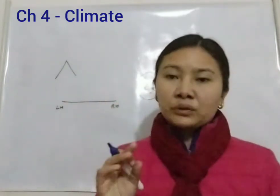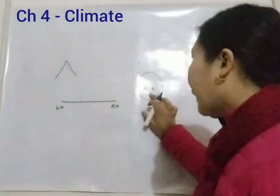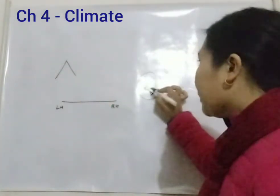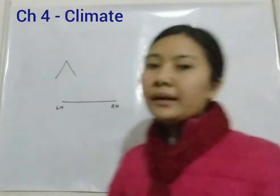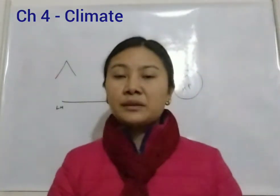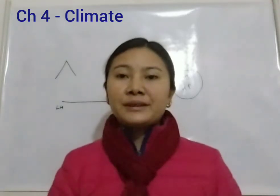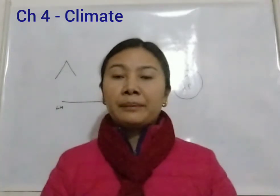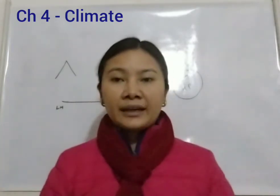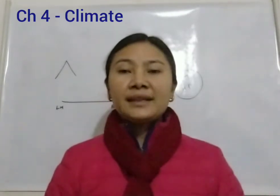High temperature means low pressure, and low temperature means high pressure. We will talk about pressure and wind systems — that includes surface winds such as sea breeze, land breeze, trade winds, the south-west monsoon winds, and upper air circulation like jet streams. There are six climatic controls in total.